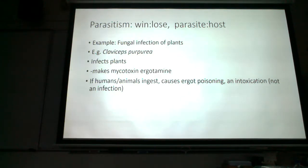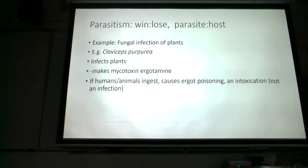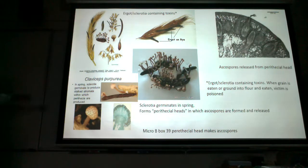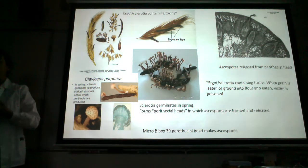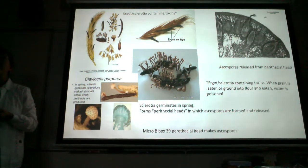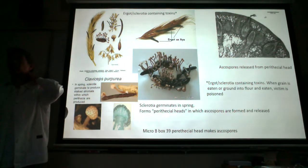Unfortunately, ergotamine is heat-stable. If we harvest the grain, grind it into flour, and bake it — the ergotamine won't be inactivated by heating in the oven. If we eat the bread, we ingest the ergotamine and it causes bad effects. The black structures on the head of grain are the collection of Claviceps purpurea hyphae — called ergot or sclerotia — and they're chock-full of ergotamine.